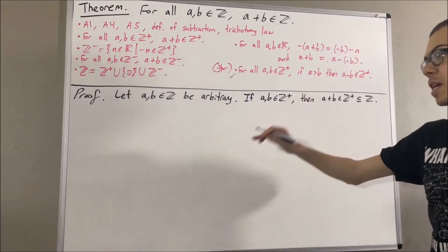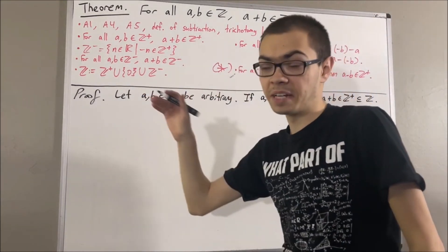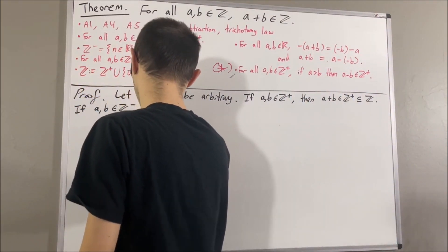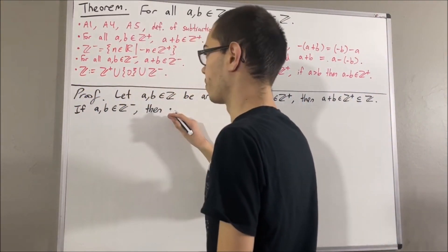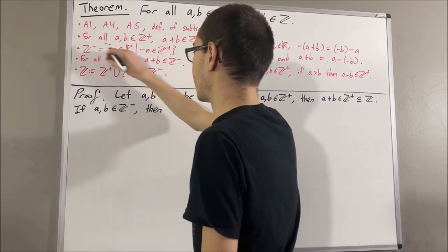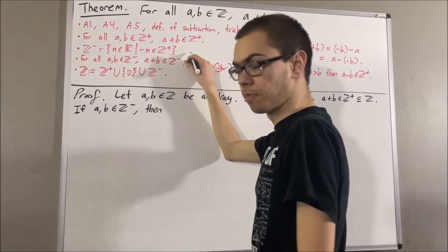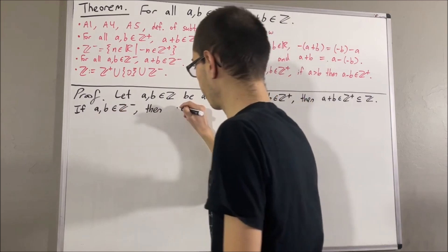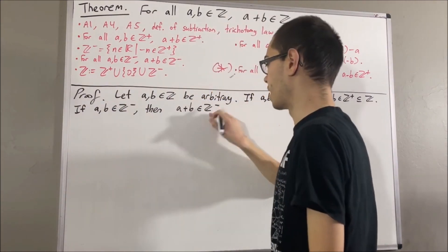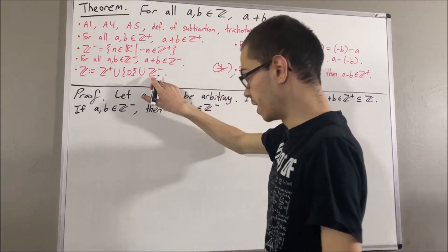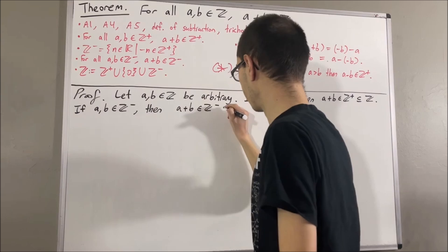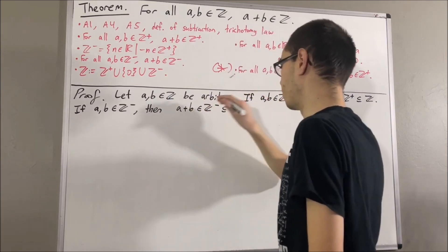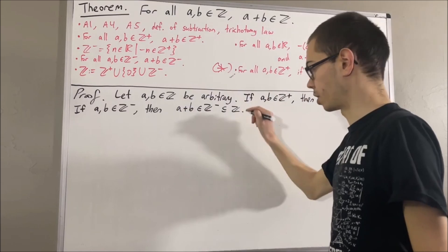Another possibility is that both a and b are negative integers. If this happens, we know that the negative integers is closed under addition as well, so a plus b is a negative integer. And since the negative integers is a subset of the integers, a plus b is an integer.